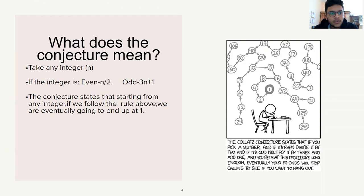What does the Collatz Conjecture mean? Take any integer n — if it's even, divide by 2, and if it's odd, multiply it by 3 and add 1. The Collatz Conjecture simply states that starting from any integer, no matter what it is, if we apply the Collatz Conjecture to it, we are eventually going to end up at 1.